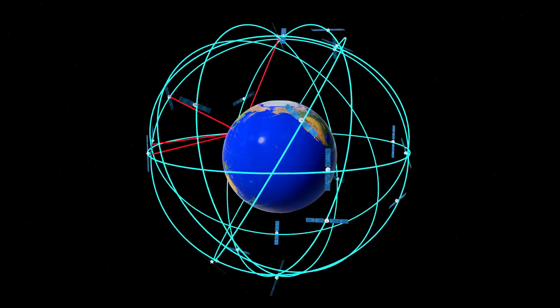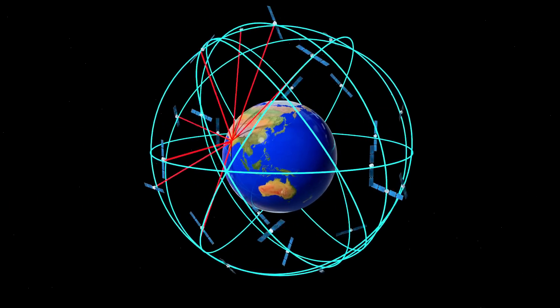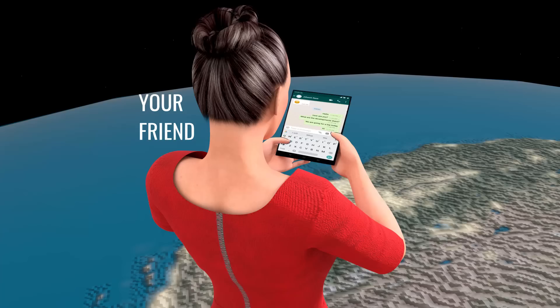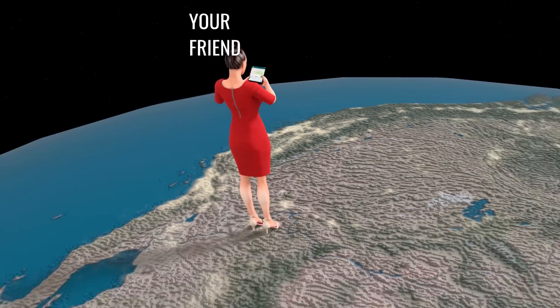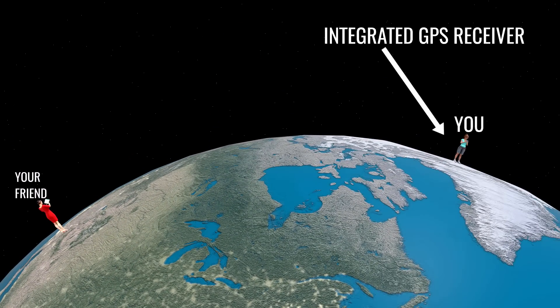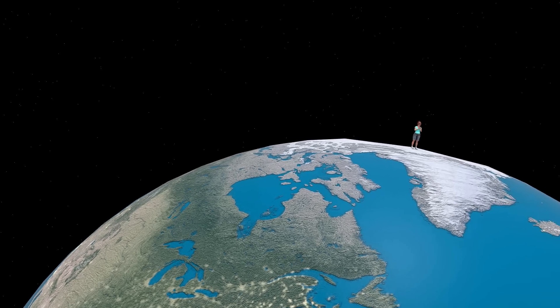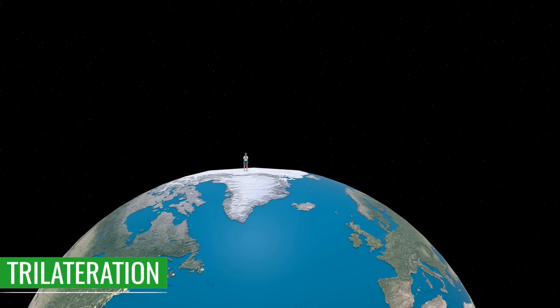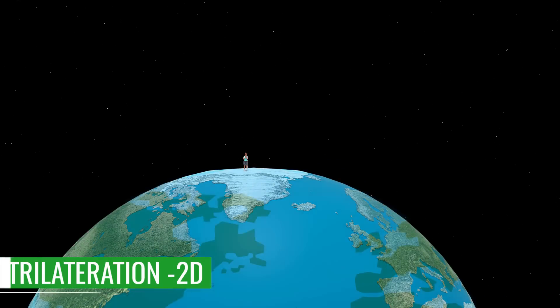Let's put aside all these complications and understand the technology of GPS in a step-by-step and logical manner. Let's assume that your friend wants to find out your location and you have a mobile phone, which has an integrated GPS receiver. In GPS, an interesting mathematical technique called trilateration is used to locate someone's position. Let's first understand trilateration in a two-dimensional way.